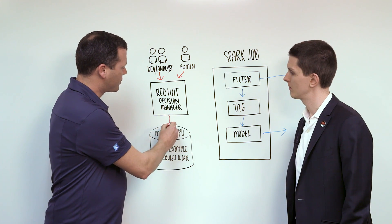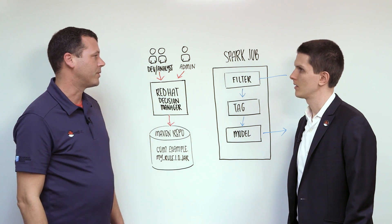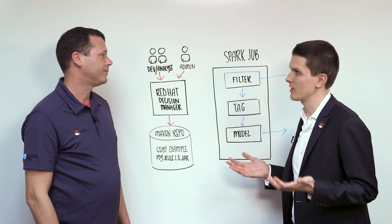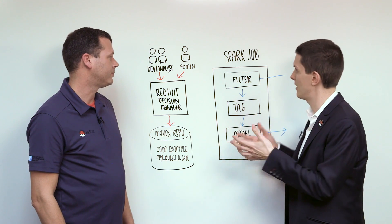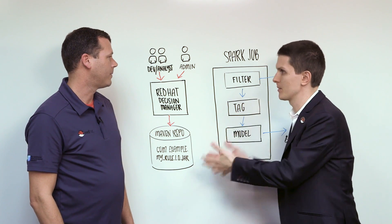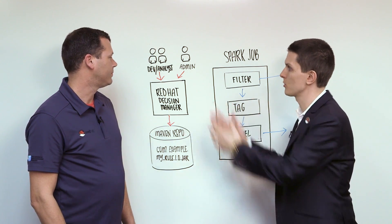That JAR file is stored within a Maven repository. All right. And so that's like something like Nexus that we probably already have laying around. Right. Well, that's great. So then once they're in our Maven repository, how does our Spark job actually access them so we can actually use these rules that the analysts made?